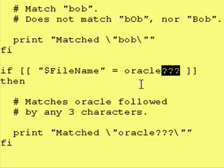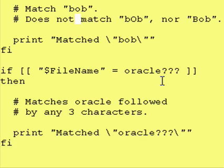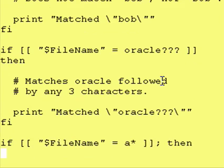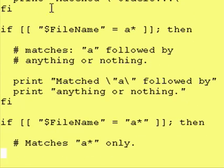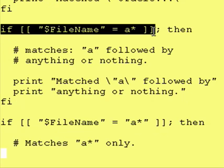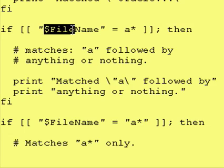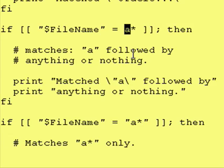So we went over an exact match, which was looking for the word Bob, and then a match where we said we know it starts with Oracle and has three characters after it — it could be any three. Let's get even a little more general than that. This next test will be true if the value within the file name variable starts with the letter lowercase a, and is followed by anything or nothing. That's what the asterisk means.